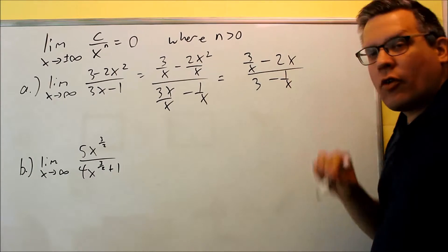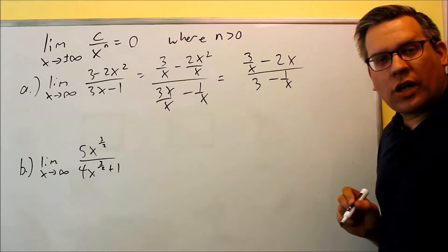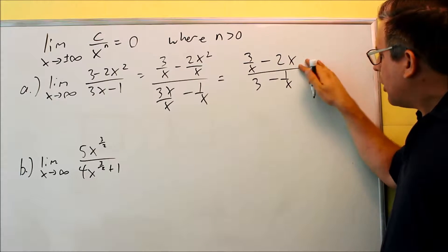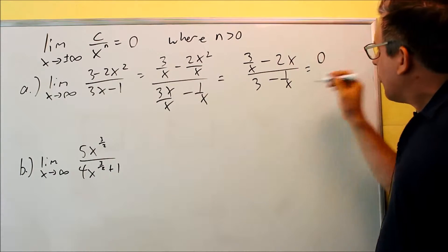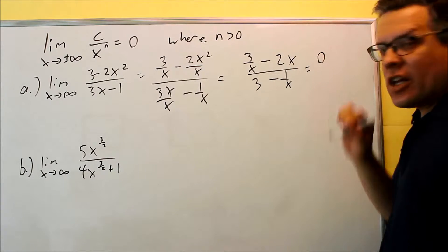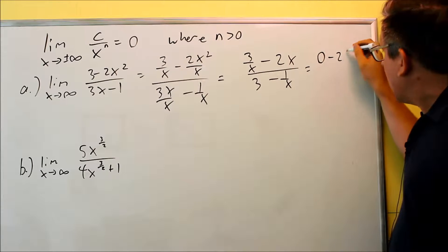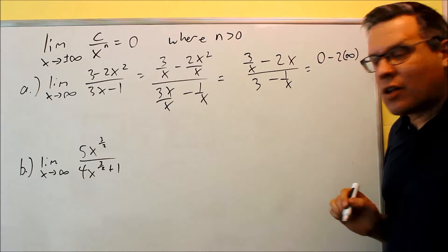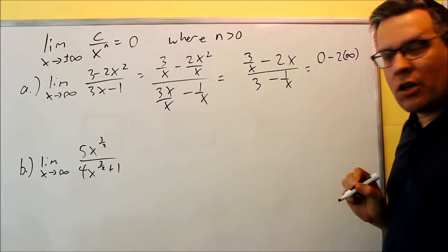Anytime you have a constant over x to a certain power, that's going to go to zero. So in this case, when I plug the infinity in, I do get a zero for that one, but this negative 2x, technically I can think of that as negative 2 times infinity. I can think of that as putting an infinity in there in that case.